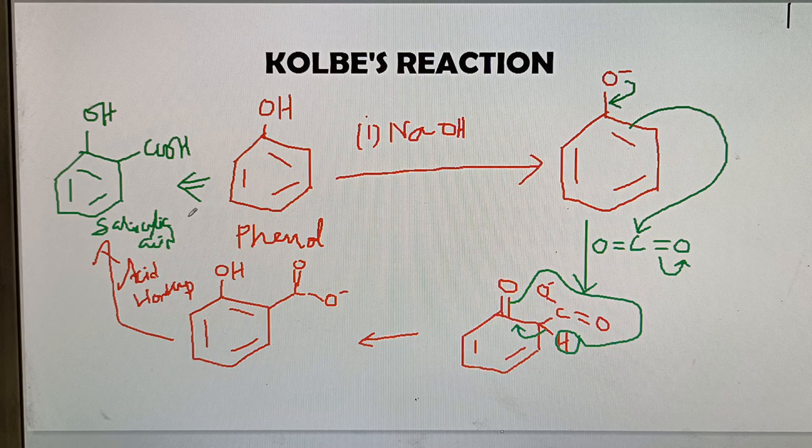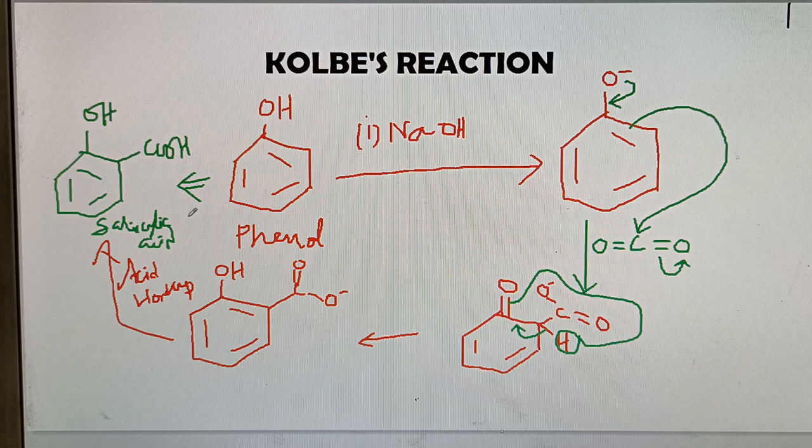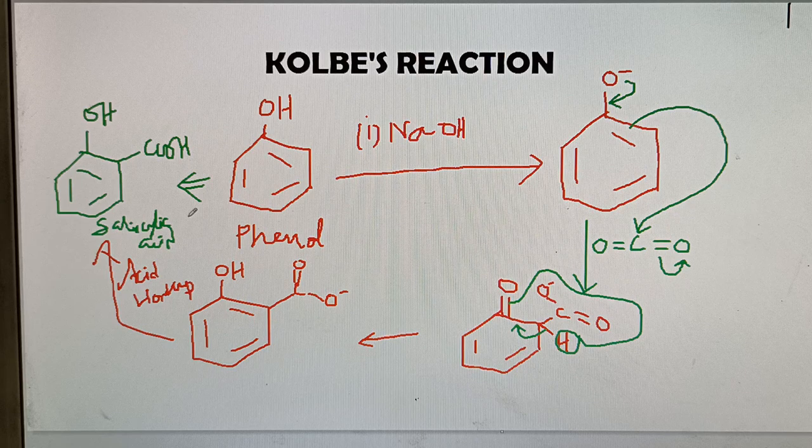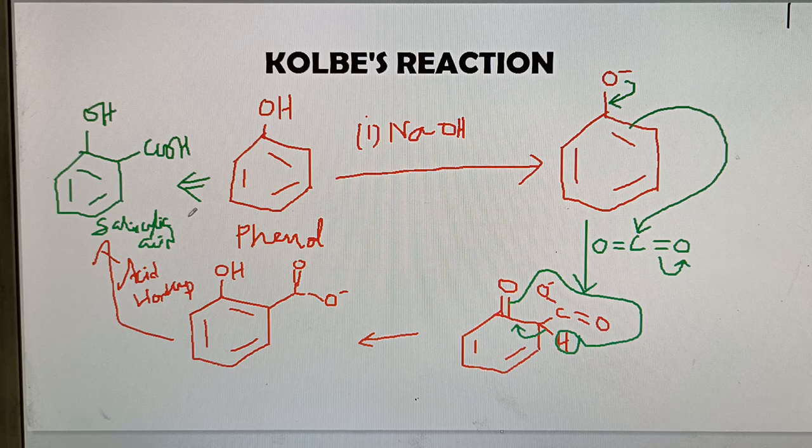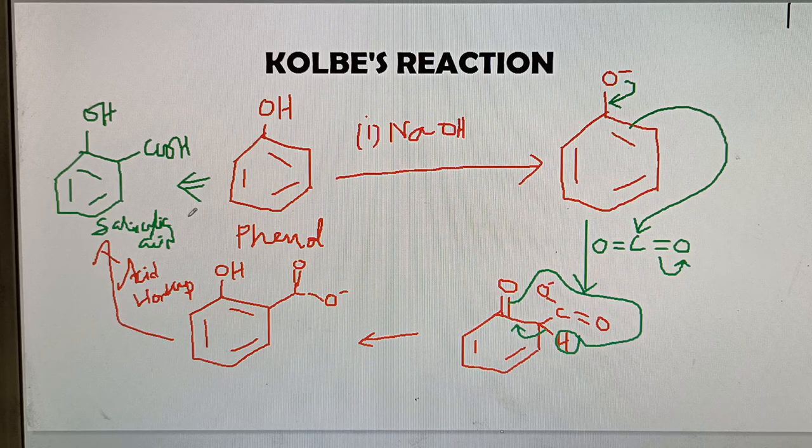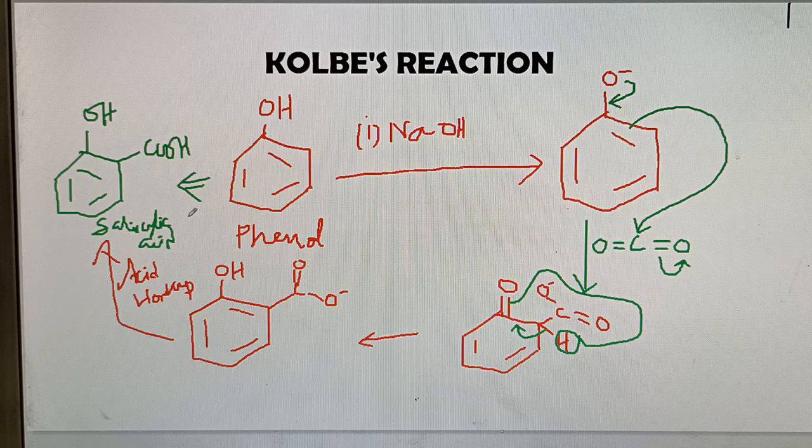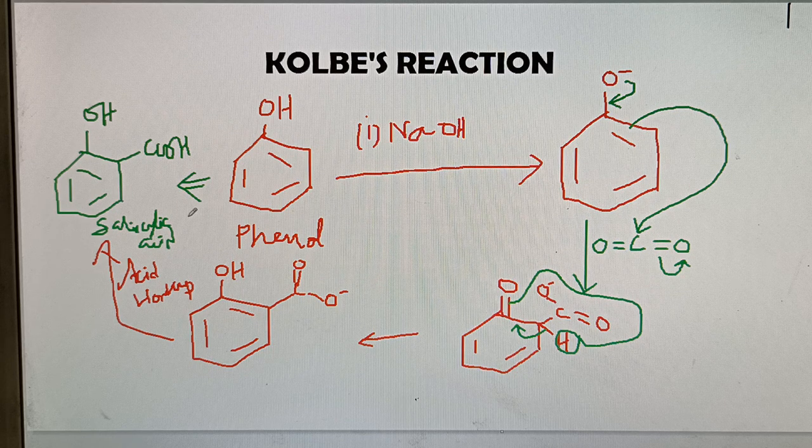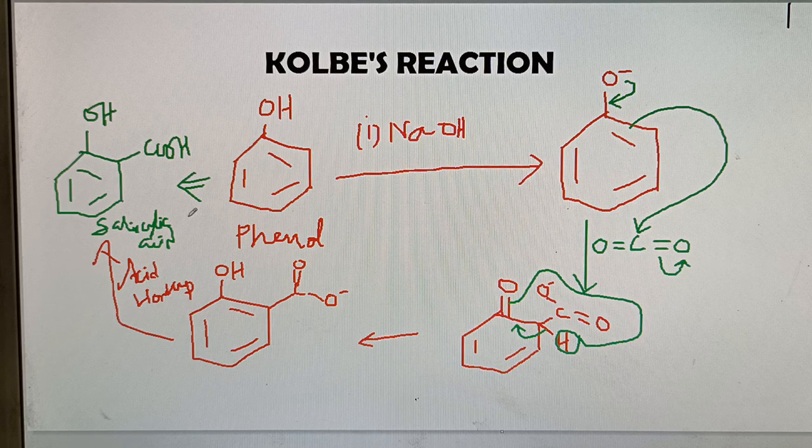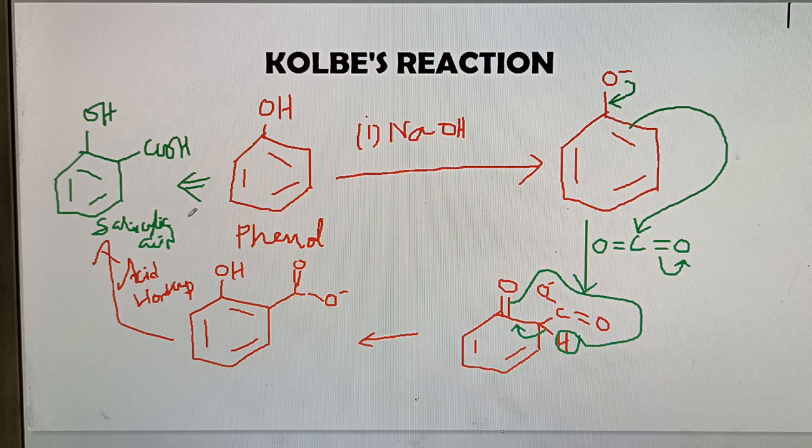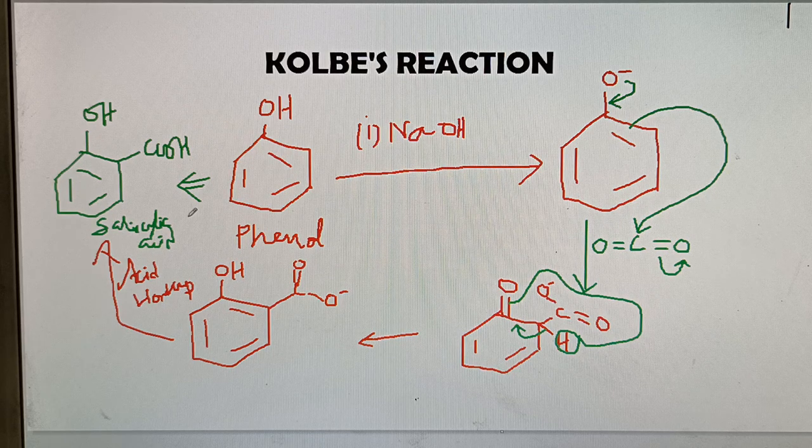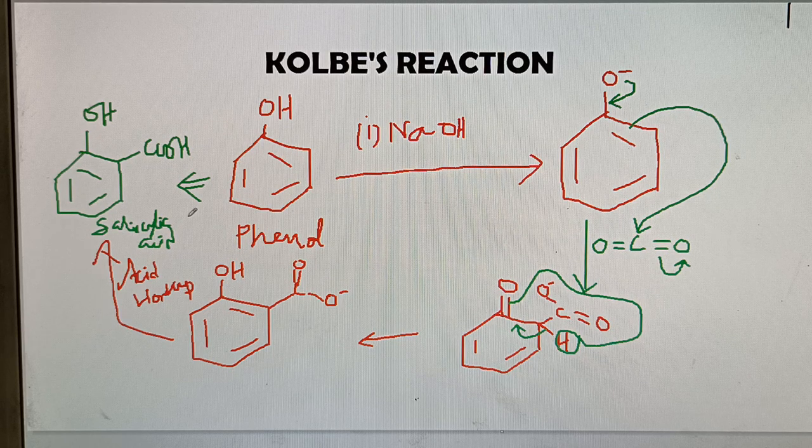In brief, we can say that phenol can be converted to orthohydroxybenzoic acid that is salicylic acid by the reaction with NaOH and CO2, and this reaction is called Kolbe reaction.